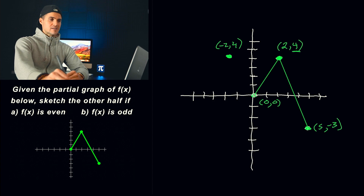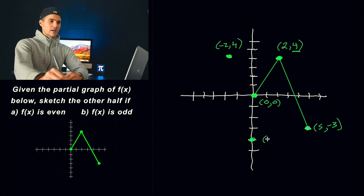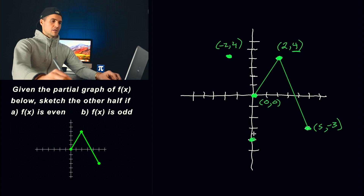Now the point (0, 0) — as I mentioned, if we were to reflect that, it would just stay at (0, 0). The y stays at 0, and negative 0 is the same as positive 0. So this point does not reflect; it stays as is. Any point on the y-axis would stay as is. If we had a point at (0, negative 4), the y value stays the same and switching the sign of x keeps it at 0, so it stays on the y-axis no matter what.